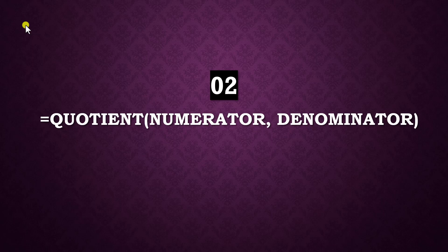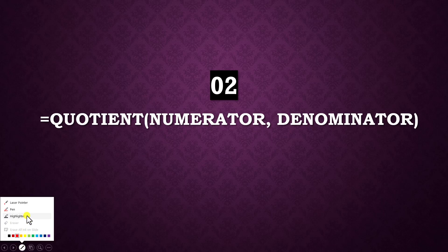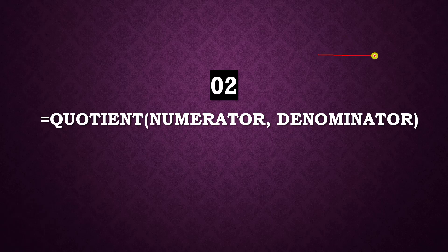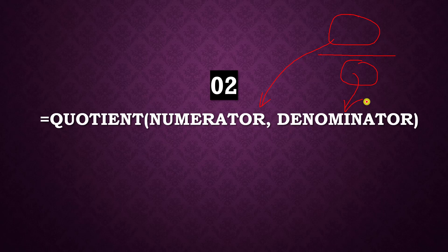The numerator is what we divide, and the denominator is the divisor. The quotient function has two arguments — numerator and denominator. What are the two arguments? Numerator and denominator.